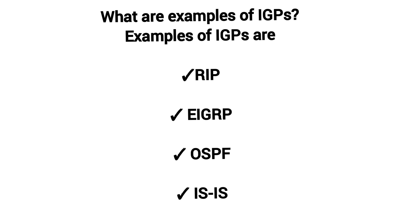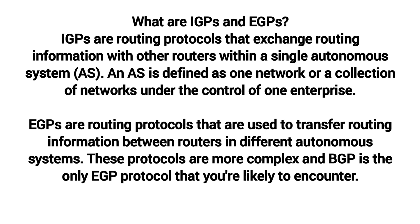What are examples of IGPs? Examples of IGPs are RIP, IGRP, OSPF, and IS-IS. What are IGPs and EGPs? IGPs are routing protocols that exchange routing information with other routers within a single autonomous system. An AS is defined as one network or a collection of networks under the control of one enterprise. EGPs are routing protocols used to transfer routing information between routers in different autonomous systems. BGP is the only EGP protocol you are likely to encounter.